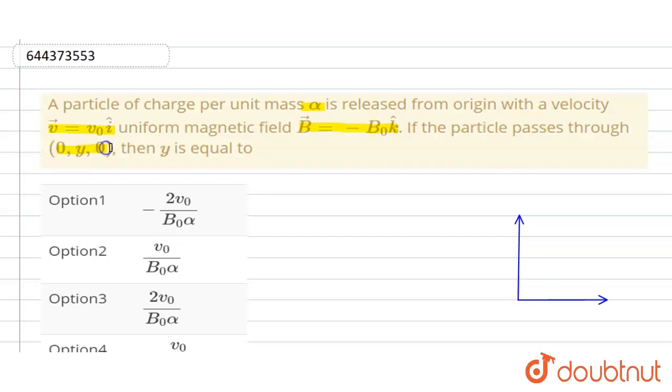Suppose a particle with initial velocity v0 is moving along the y direction. Its coordinate is (0, y, 0). We can write this is in the y direction, and the magnetic field is into the paper.